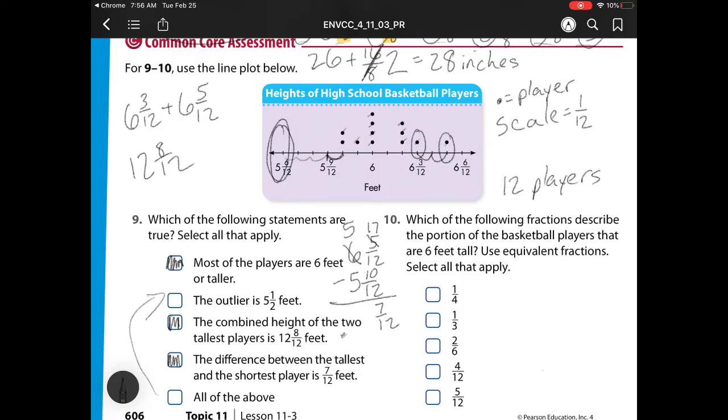Now, which of the following fractions describe the portion of the basketball players that are 6 feet tall? Use equivalent fractions. Well, 6 feet tall, I have 4 parts or 4 pieces out of how many players? Out of 12. So I see that's one here. But now I see any other equivalent fractions. So I could divide this by 2 halves, which would give me 2 sixths, which I see is here. I can then divide again by 2 halves, which will give me 1 third, which I see is right here. That's it.